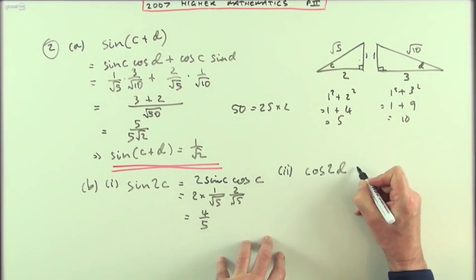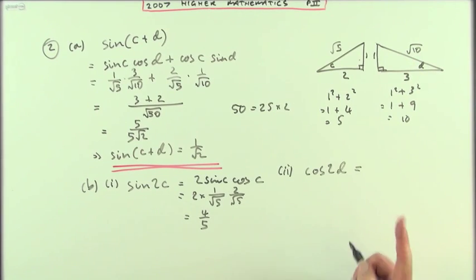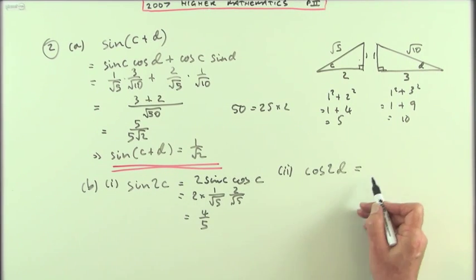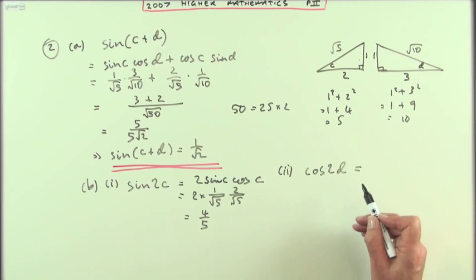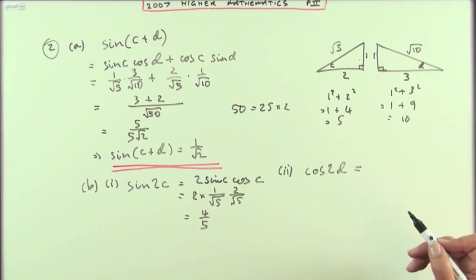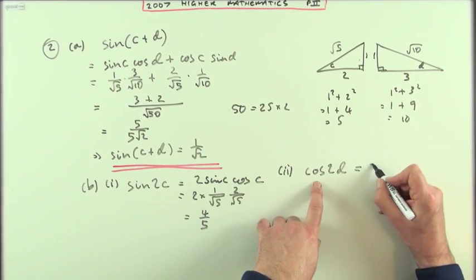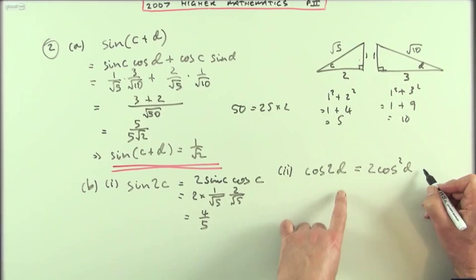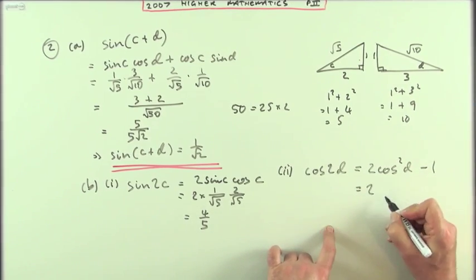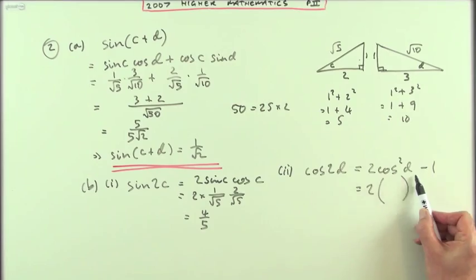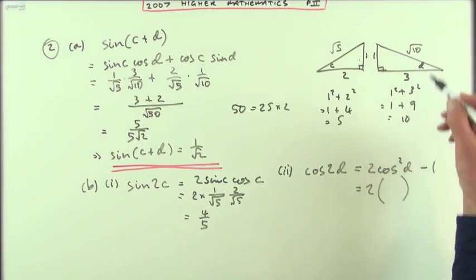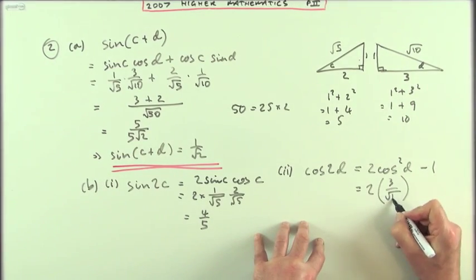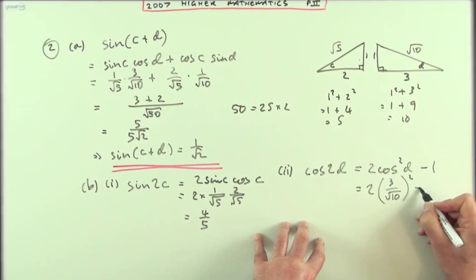Now cos 2d is meant to have the same answer as this. Well what have we got here then? Cos 2d, that's 3 variants of that. I could have cos squared minus sin squared, 2 cos squared minus 1, or 1 minus 2 sin squared. I think I'll go for 2 cos squared of d minus 1. So it's 2 times whatever the cos of d is, adjacent to d. Adjacent to d is 3, 3 over root 10. Adjacent over the hypotenuse, and I'll be squaring that.